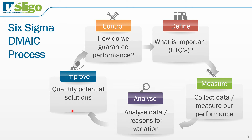In the improve phase we will look at specific changes that can be made to the process in order for it to achieve its full potential and desired level of performance. Experimental design, also known as design of experiments or DOE, is the main statistical tool that we can apply in this phase. In experimental design we can make systematic changes to the process variables with a view to understanding their influence on the process performance.